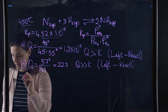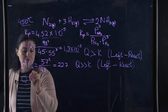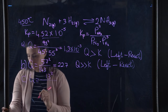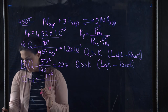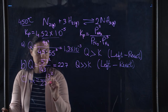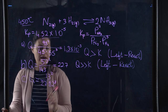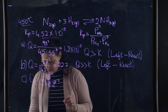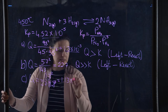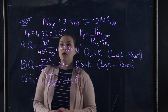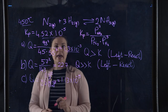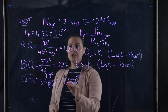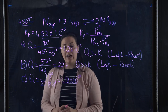For part C, Q equals (13)² divided by (27) × (82)³. Doing the math gives Q = 1.13×10⁻⁵. Now let's compare this Q to the K value.